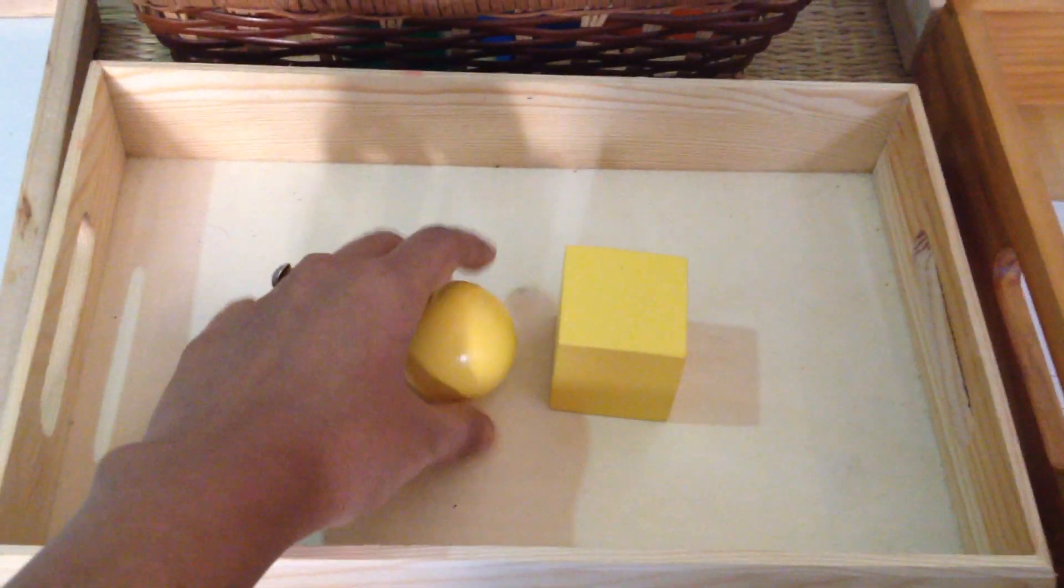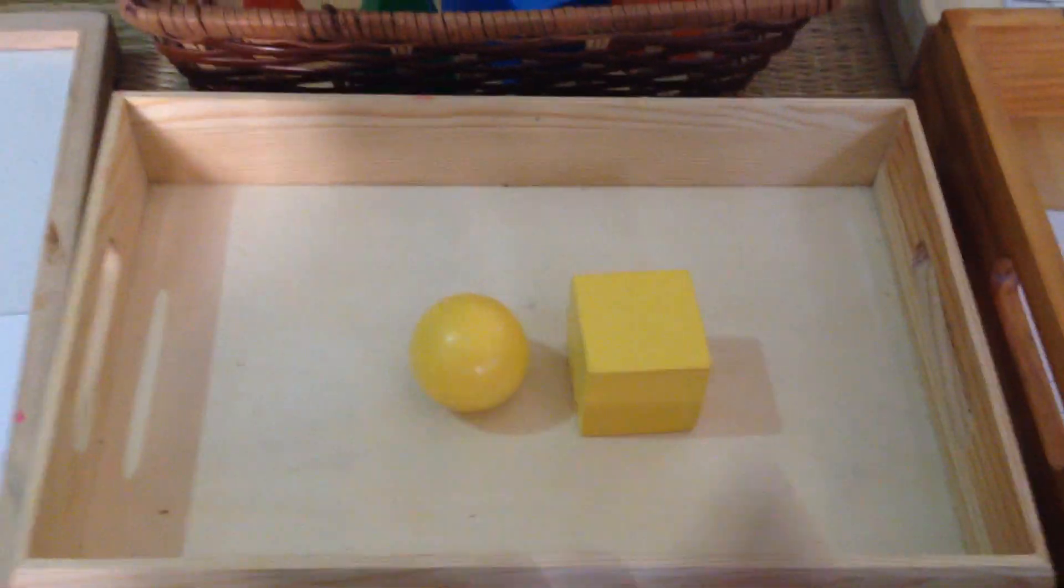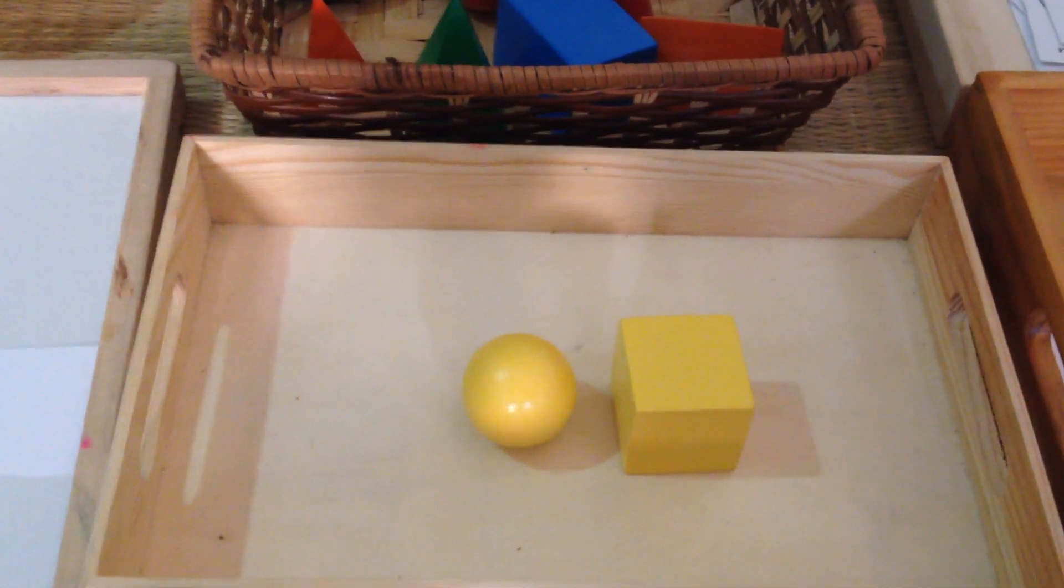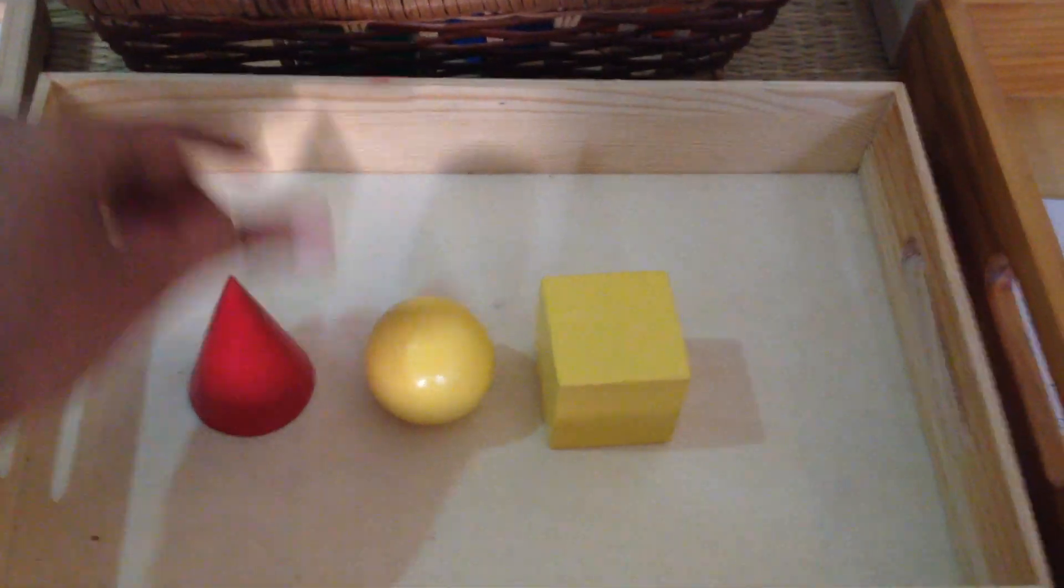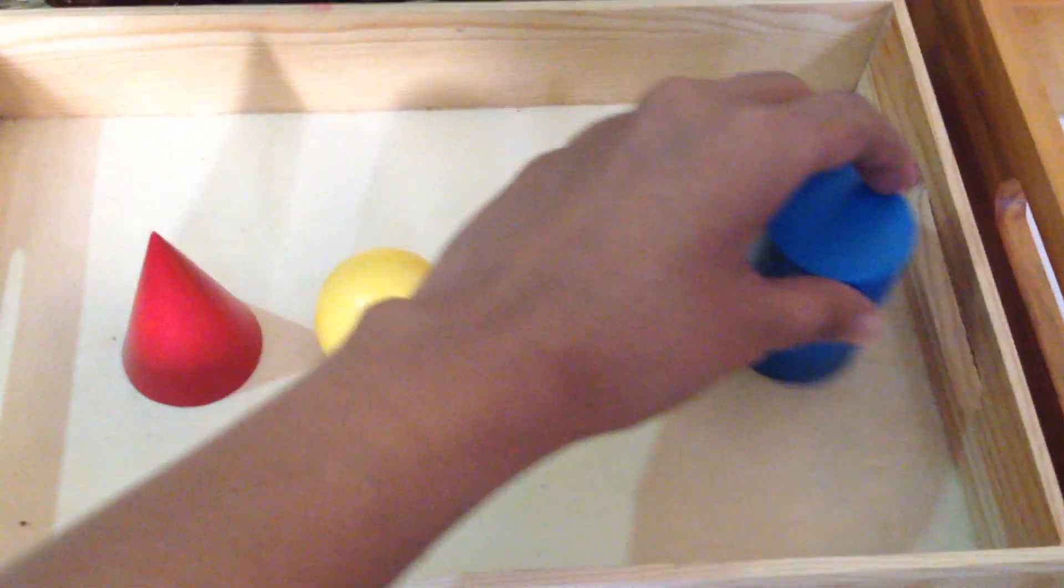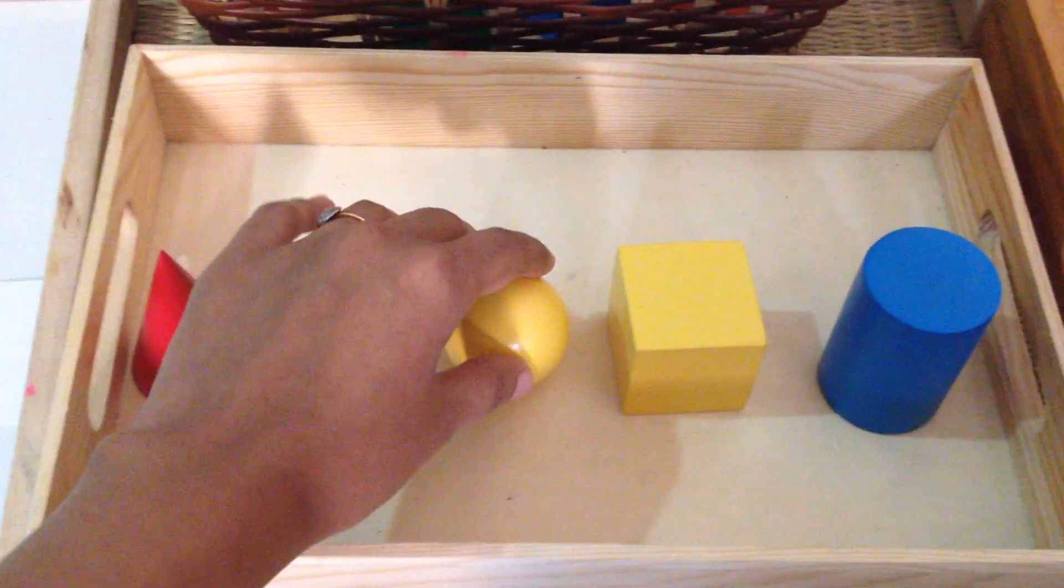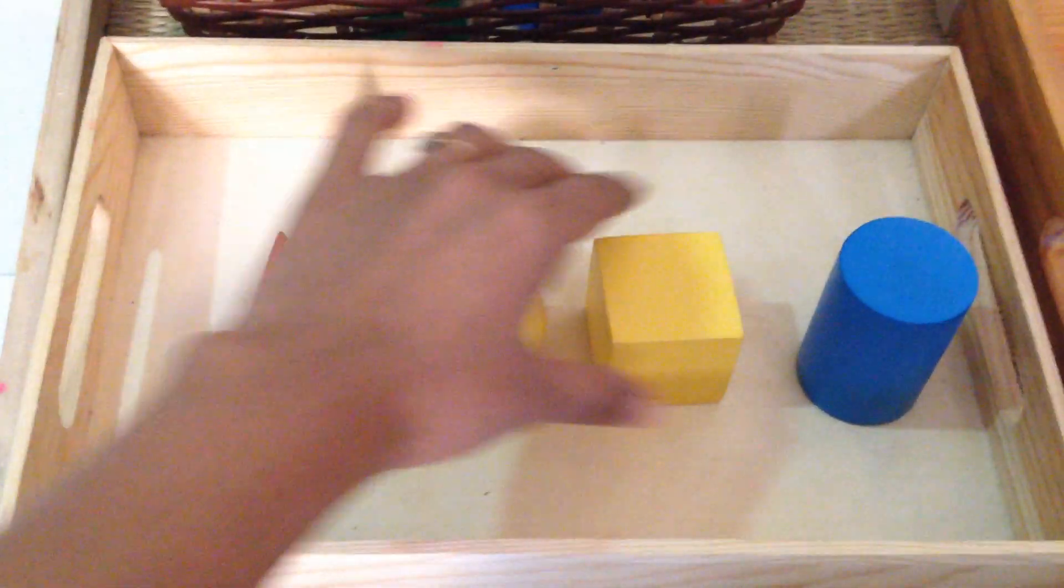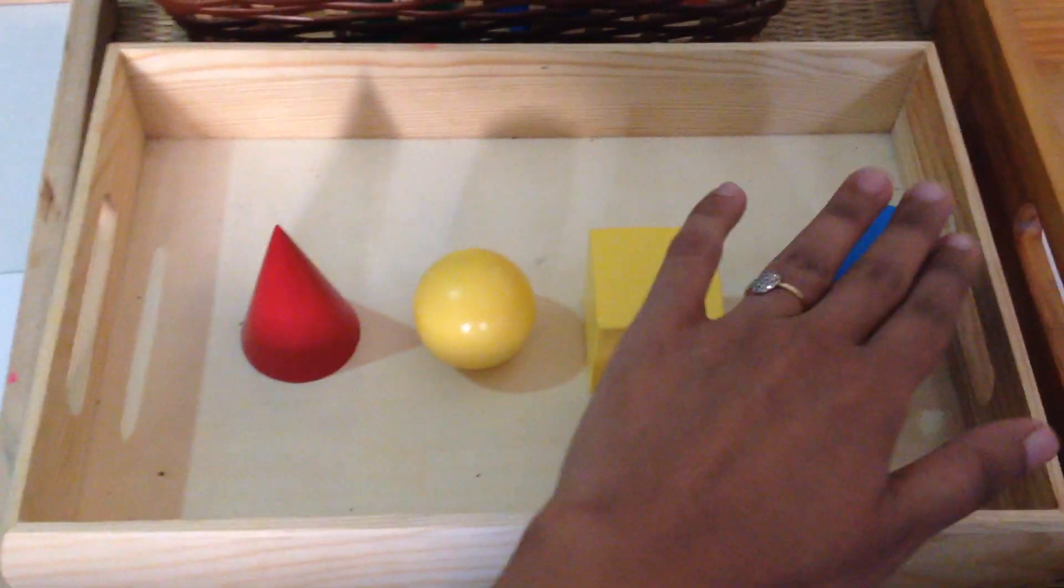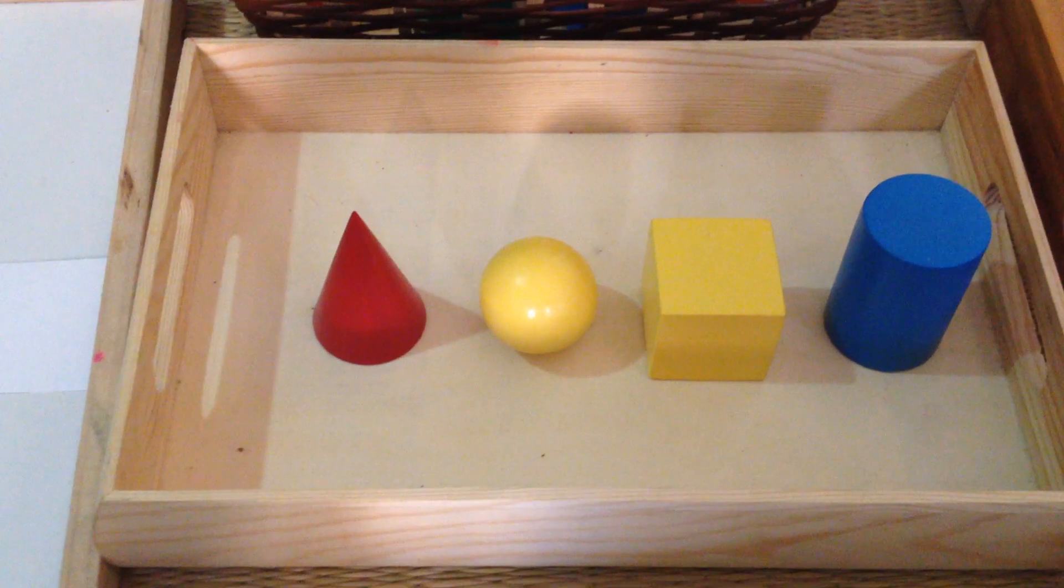Then once your child is confident about naming and recognizing these two 3D shapes, you introduce one more. I would suggest a cone or a cylinder. Again, you can do like a three-period lesson with three or even four different shapes and talk about each of the attributes.